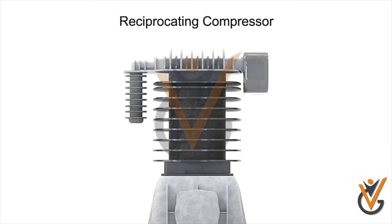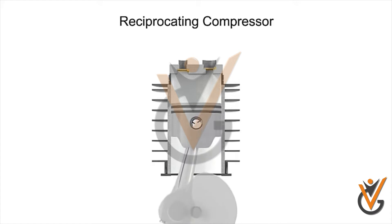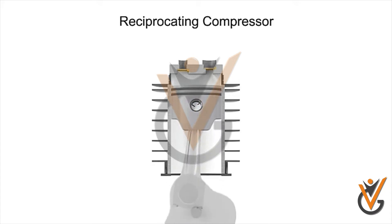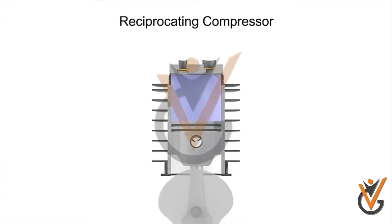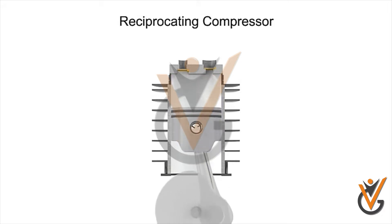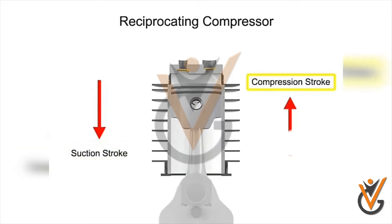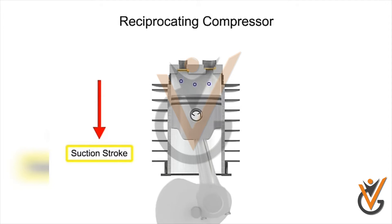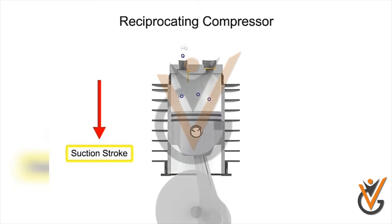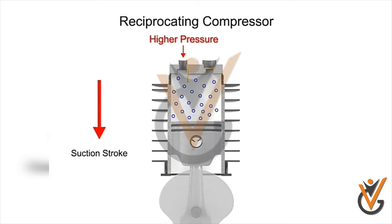A reciprocating air compressor consists of a piston connected to the low and high sides of the suction and discharge lines. The crankshaft rotates, which in turn moves the piston. The downward-moving piston reduces the pressure in the main cylinder; the pressure difference opens the suction valve, and low pressure air fills the cylinder. The piston then moves upward, building up pressure and closing the suction valve. When the air is pressurized to its specific value, the discharge valve opens.